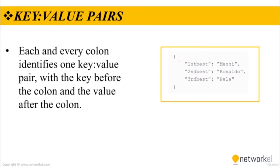You can see here we have one, two, and three key-value pairs. These are the keys and these are the values. First-best is the key and Messi is the value. Second-best is the key and Ronaldo is the value. Third-best is the key and Pele is the value.